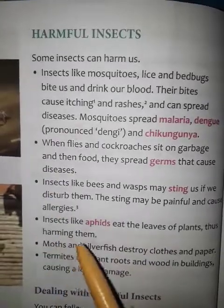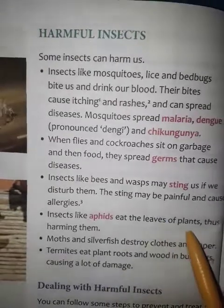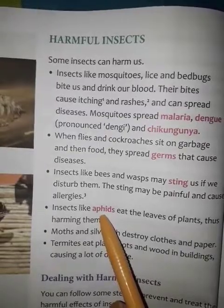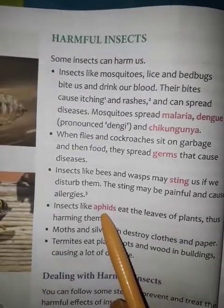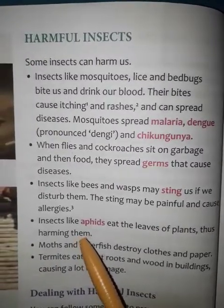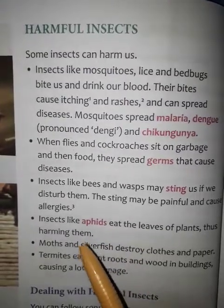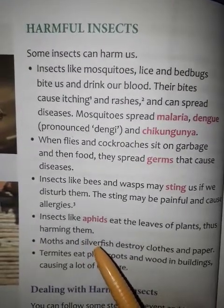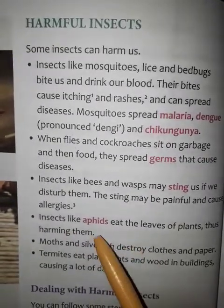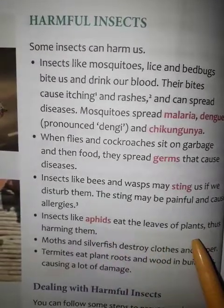Next, point number four: insects like aphids eat the leaves of plants, thus harming them. Aphids are insects whose food is the leaves of plants. They go on eating the leaves of the plants very hungrily, which harms the plants a lot. Ultimately the plants may also die, so a lot of damage to plants occurs due to the aphids because of their habit of eating leaves.